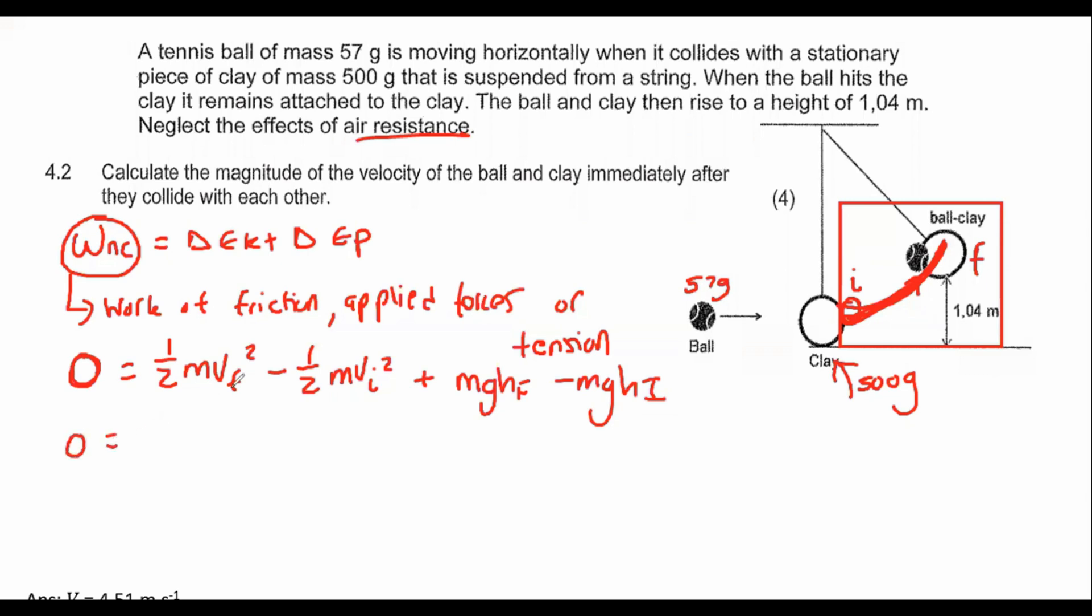So if we say zero equals—your final velocity will be zero up here, because when you rise to a height, when you reach your maximum height, your velocity is zero. The mass of the ball and clay, we can add their masses together. That's going to be 557 grams, which is 0.557 kilograms. Final velocity of zero, the initial velocity is the velocity as soon as they have collided with each other, and that is the velocity that we are trying to calculate. So we will keep it as an unknown.